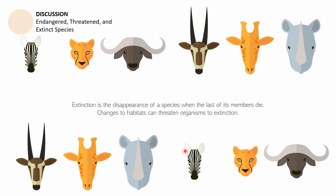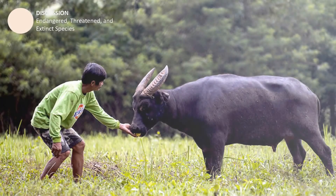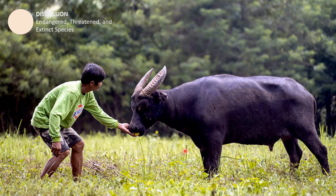Both endangered and threatened species are on the path toward extinction. Extinction is the disappearance of a species when the last of its members die. Changes to habitats can threaten organisms toward extinction. We will soon discuss the different environmental changes that threaten the survival of populations.